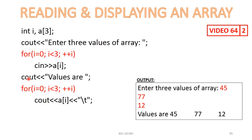For example, this program contains values that are shown and displayed by index position. The same for-loop is used for display — i equals 0, i less than 3, and i plus plus. The index position value is displayed at each iteration — index 0, then 1, then 2.